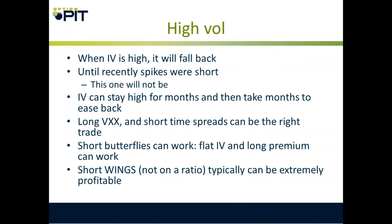When IVs are low, they can stay there for a very long time. Money can seem easy — that's the easy time to sell premium, when premium sellers can think they're a genius because they're making money. But money can go away incredibly fast. The play is to be long vol and long units and short premiums. You can buy back-month options; long units are cheap options. During periods of low volatility, I really like calendar spreads. For high volatility, spikes since 2008 had been relatively short. But be aware — IV can stay high for months and then take months to ease back. Trades like long VXX and short time spreads can be the right trade. Short butterflies can work, and things that are short wings, not on a ratio, can be profitable. Think debit spreads.